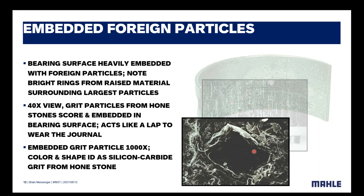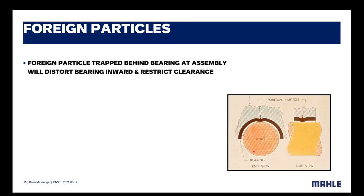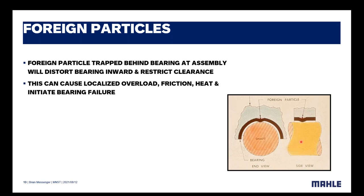You can see in the cross-view of the bearing and particulates exactly what I was talking about — it's creating a diversion in the oil film. Being a side view, you can see how the oil would be coming up and once it hits that particulate it has to detour, creating an issue with losing the oil film wedge. This causes localized overload, friction, and heat, and initiates bearing failure. Remember — the bearing can only withstand the thermal temperature of the lowest melting point ingredient in the overlay. In a copper-tin-lead bearing, the lowest melting point is tin at 449 degrees Fahrenheit.